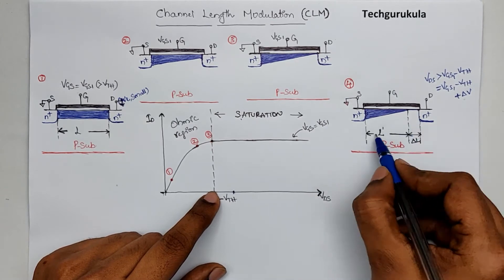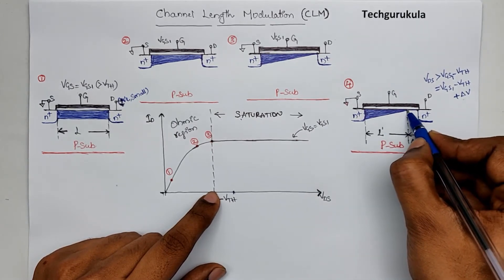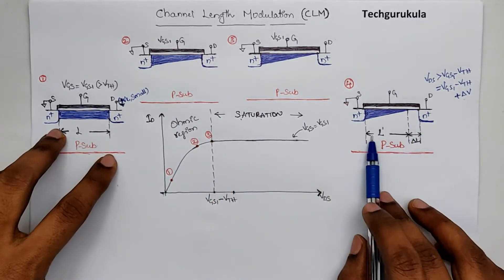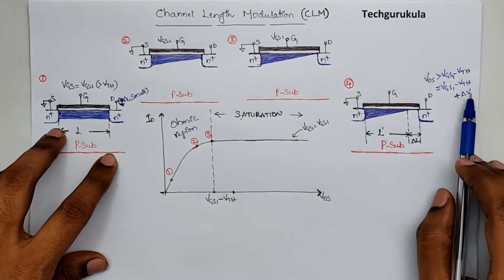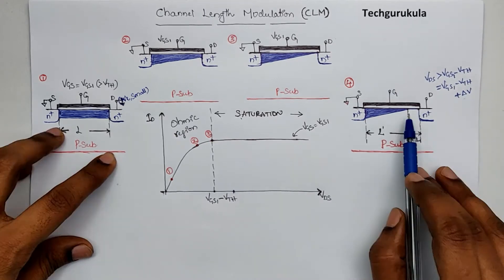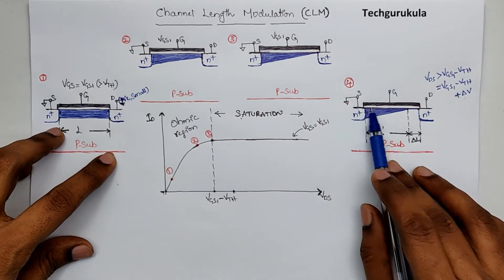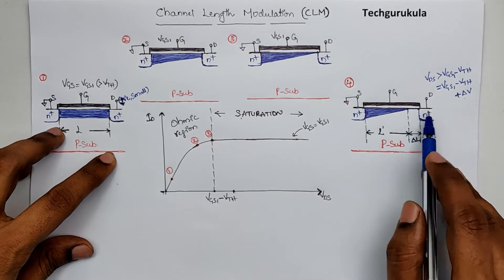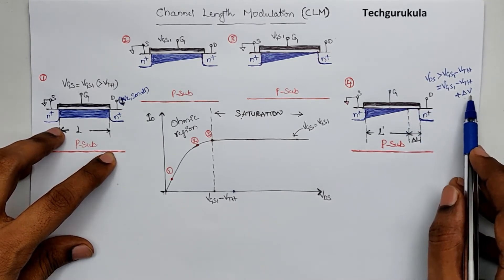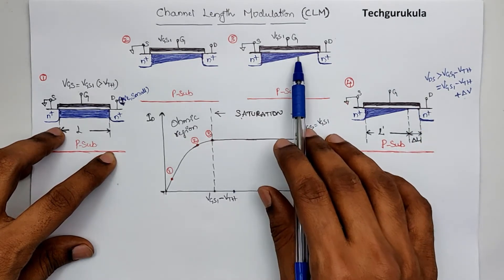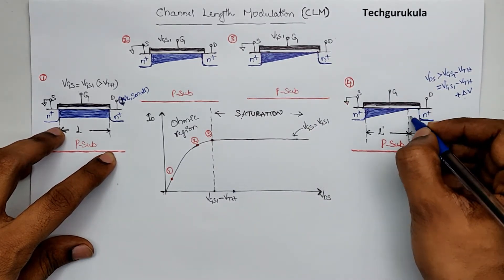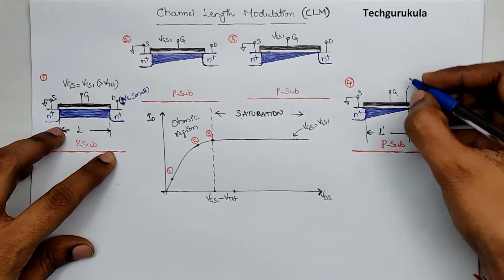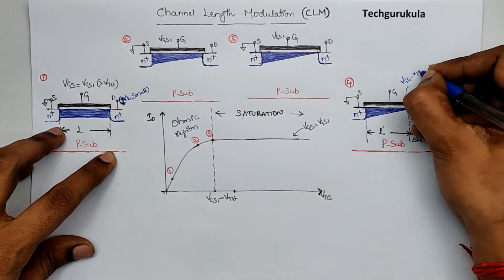In this case, if you look at the channel, it looks as if the channel is existing only till this point. When we started we assumed the channel length is L. But now the channel length seems to be reduced because of the extra voltage that we applied beyond the overdrive voltage. In this case what would happen is the electrons that are coming from source to drain, when they enter into this pinched off region, the electrons would get accelerated because we have applied a potential which is higher now, which means the electric field should be higher compared to this scenario. So the electrons that actually come here, let's say the delta V potential is getting dropped here, and at this point the potential would be VGS1 minus VTH in the channel.